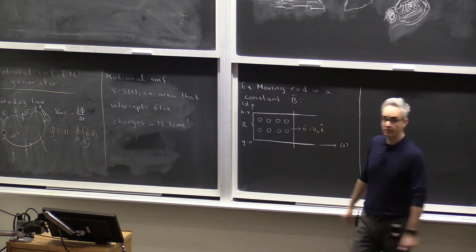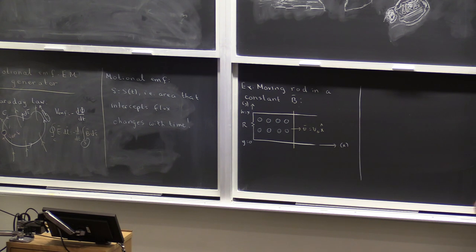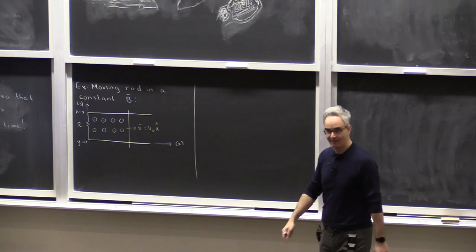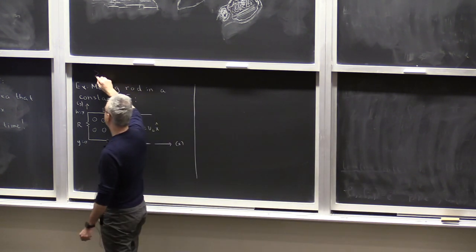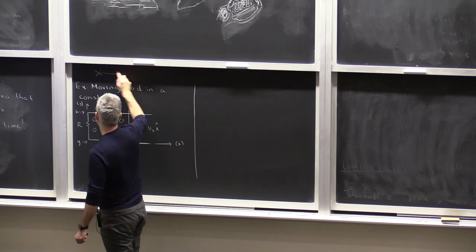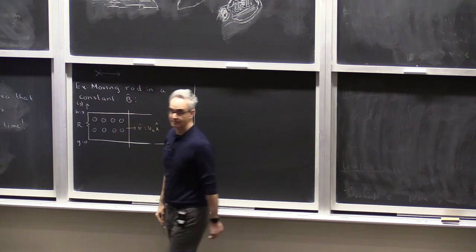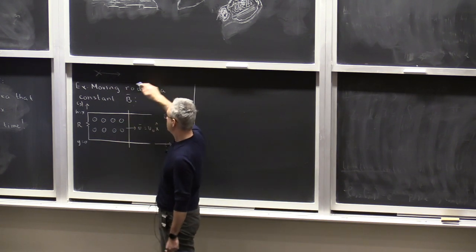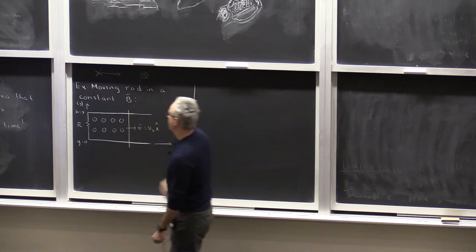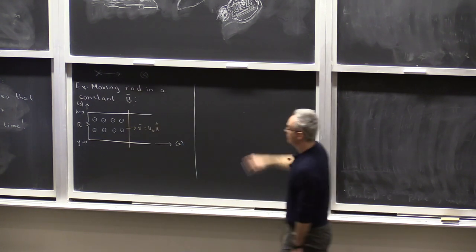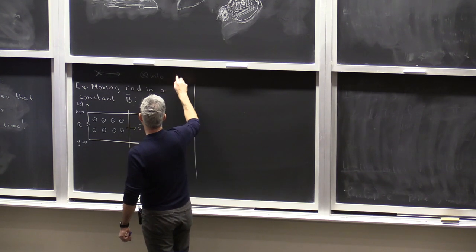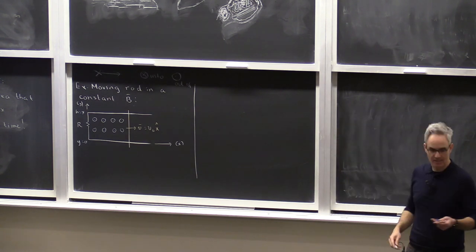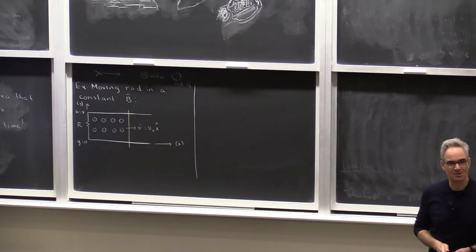Remember this notation that we encounter time and again in magnetism: the dot means that the magnetic field lines are coming out of the board. Imagine you have an arrow — when it's coming towards you, you see the front of the arrow, you see a dot. When it goes into the board, you see the X that is at the back. So X means into the board, and the dot means out of the board or the paper. Make sure you don't get it confused.